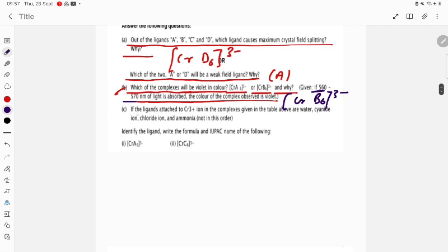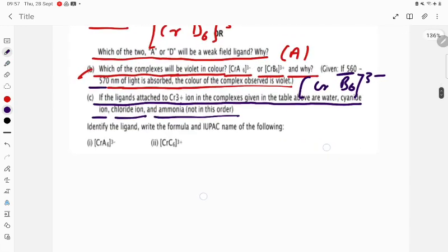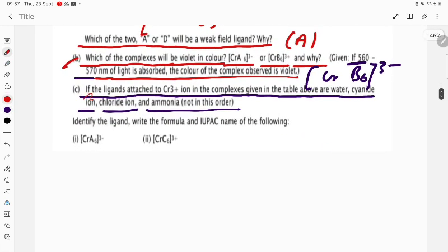Next one: If the ligands attached to Cr³⁺ ion in the complexes given in the table above are water, cyanide ion, chloride ion, and ammonia, not in this order...